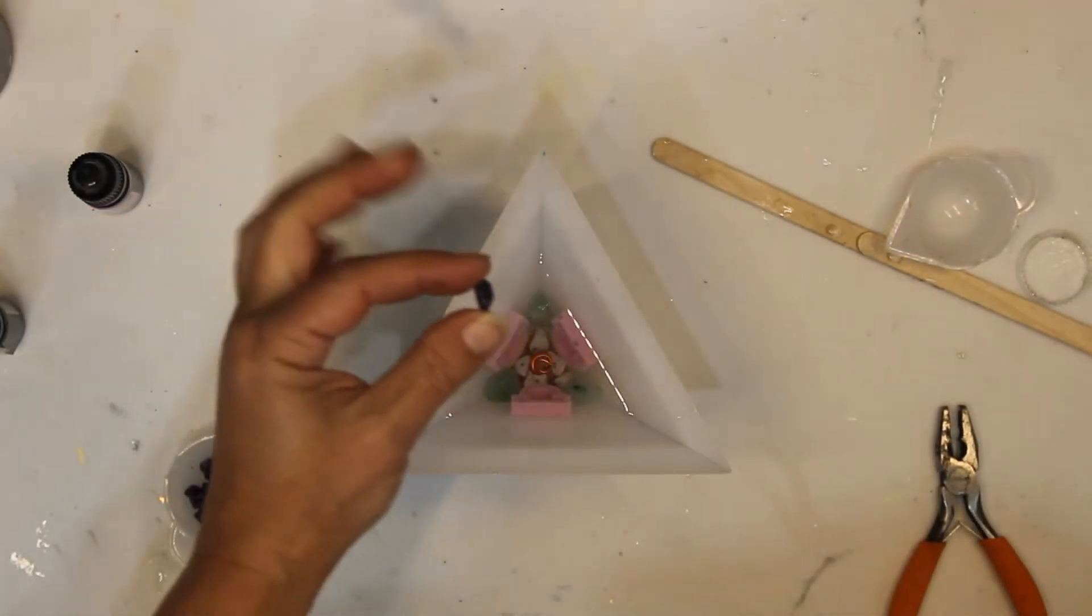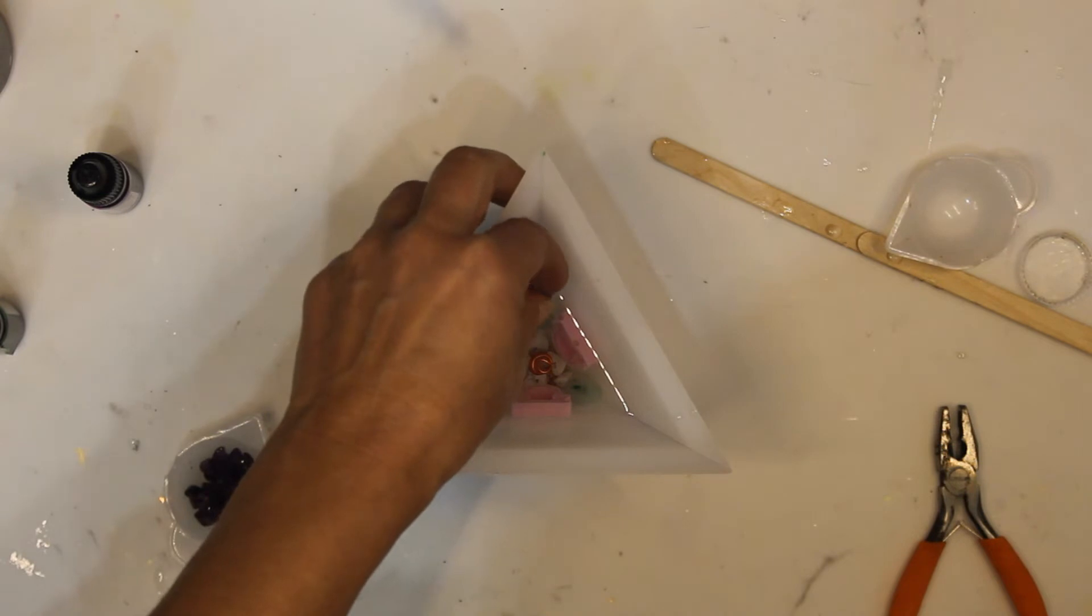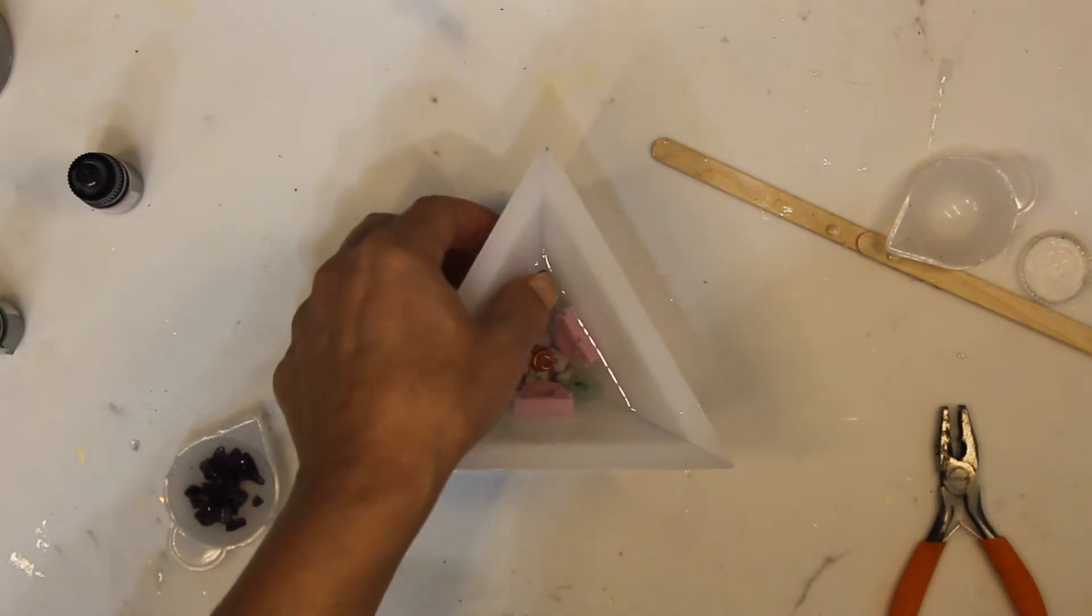Next I will pour a layer of clear resin to completely submerge the crystal and the Libra glyphs. Once this layer is partially cured, I will press three amethyst stones into the resin in each corner of the tetrahedron.